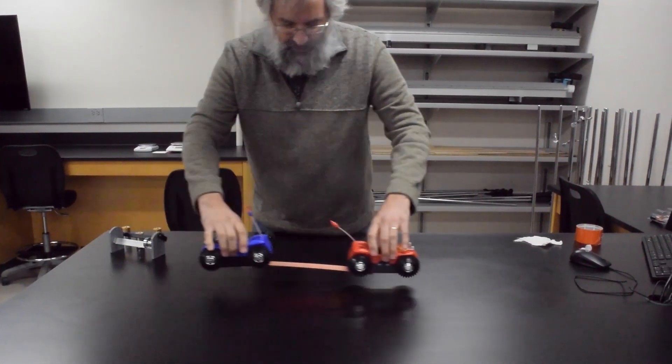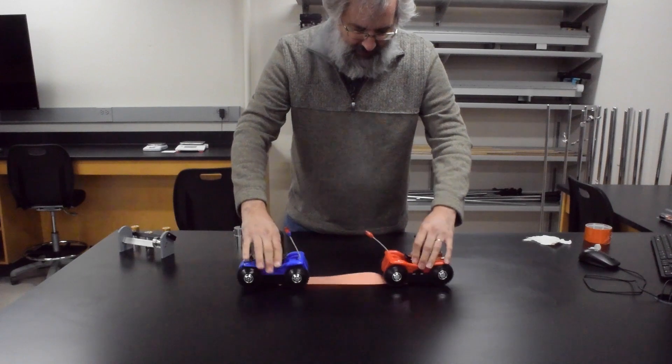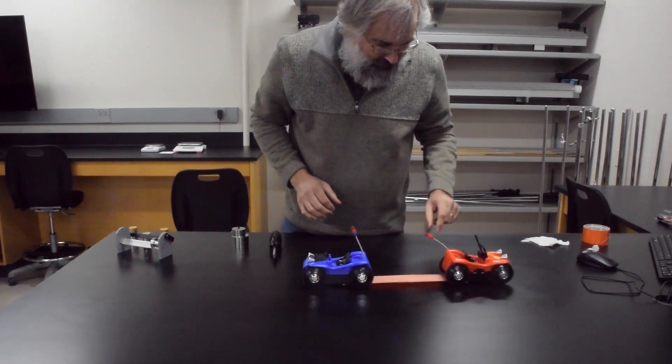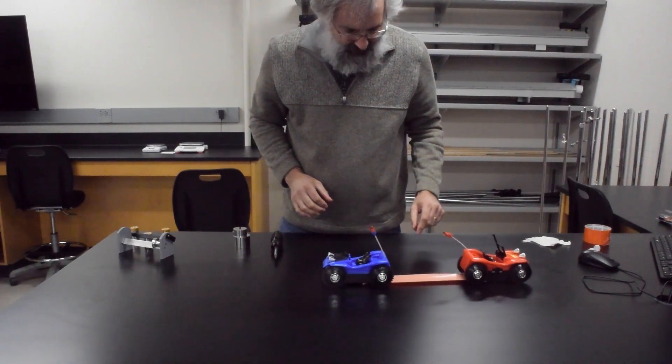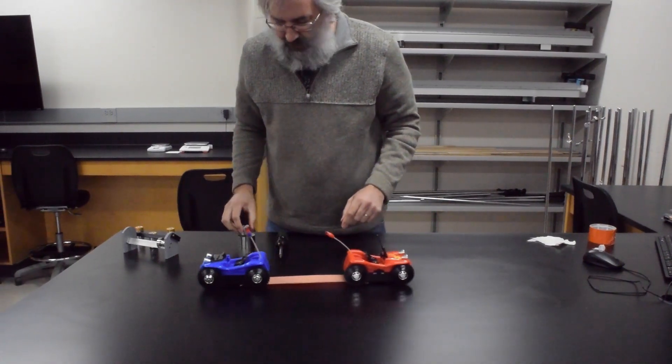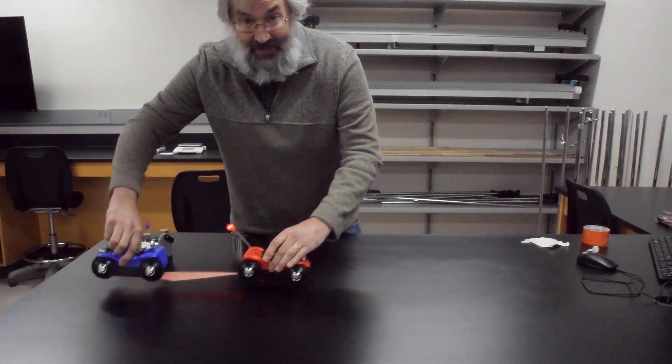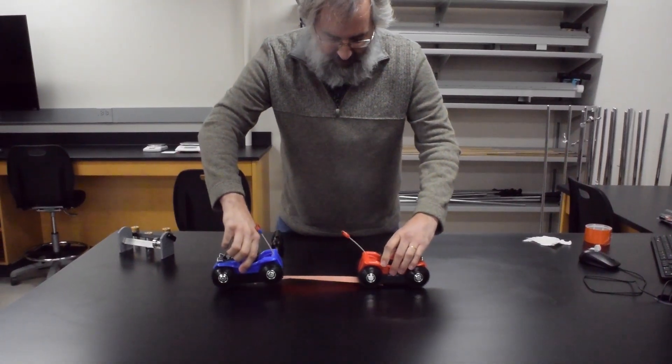The blue one's got a grip. Now it's interesting, if I give the red one a little bit of a push, it can start to take ahead. But that slow and steady blue one wins all the time, even though the tires aren't turning as fast.